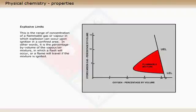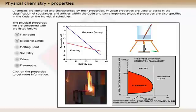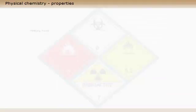This is the range of concentration of a flammable gas or vapor in which explosion can occur upon ignition in a confined area. In other words, it is the percentage by volume of the vapor-air mixture in which a flash will occur or a flame will travel if the mixture is ignited. Below the lower explosive limit, the mixture is termed too lean, containing insufficient combustible fuel to sustain ignition. Above the upper explosive limit, the mixture is termed too rich, containing insufficient oxygen to sustain ignition.